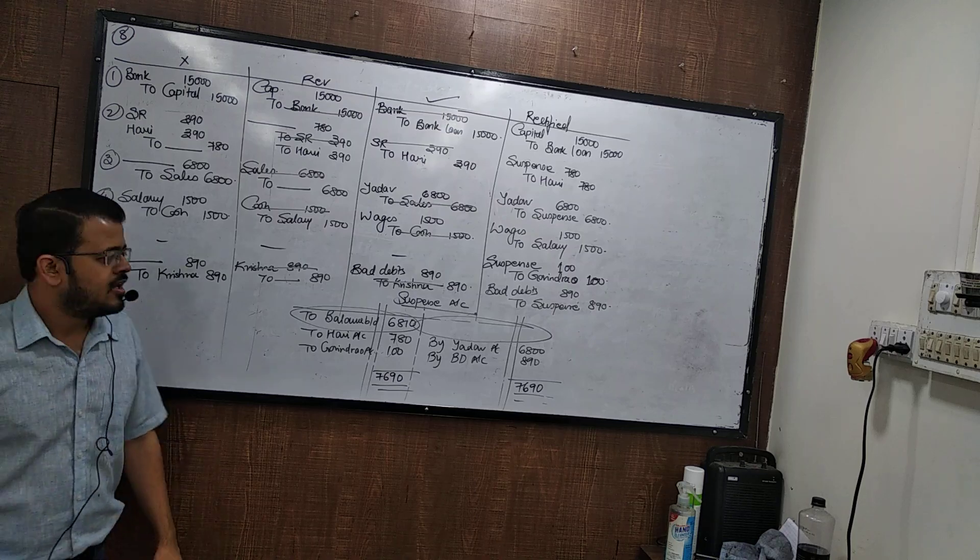There is a special case here: no opening balance is given for the suspense account. In such a situation, leave the first line blank, then do the normal posting. Entries: suspense to Hari 780; Yadav to suspense; wages to salary; suspense to Govindra 100; bad debts to suspense 890.